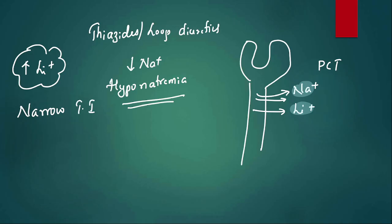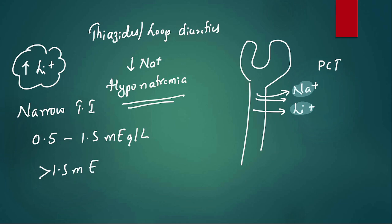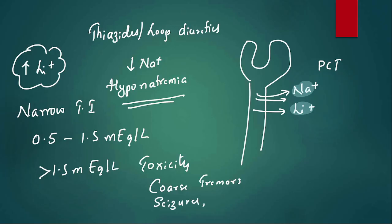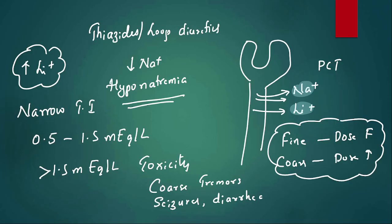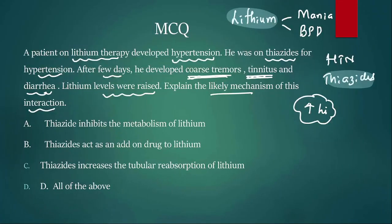This leads to lithium overdose or toxicity because lithium has a narrow therapeutic index — a minor increase in levels causes toxicity. The safe range is 0.5–1.5 mEq/L; above 1.5 mEq/L is toxicity. Signs include coarse tremors, seizures, diarrhea, and tinnitus. Fine tremors = dose is fine; coarse tremors = dose is too high.